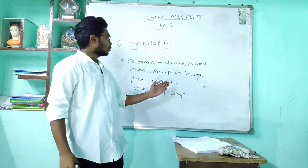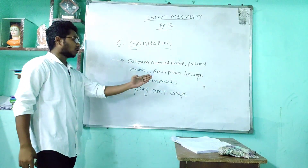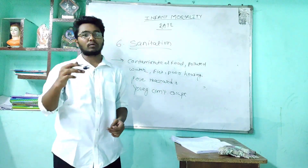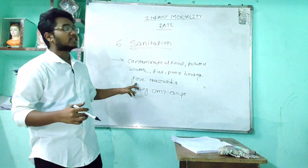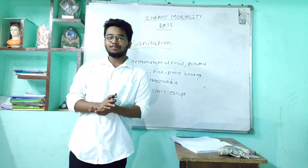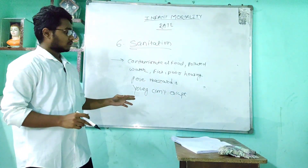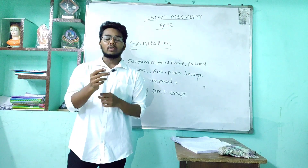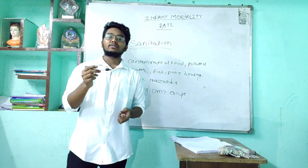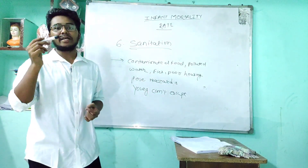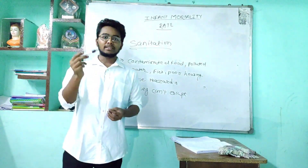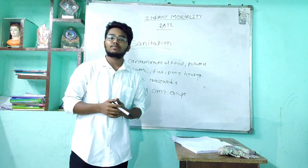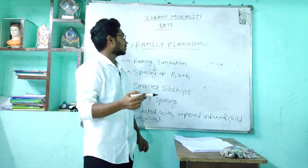Contaminated food, polluted water, flies, poor housing conditions, overcrowding, and low socioeconomic status pose hazards which young children cannot escape. Sanitation is very important around children. Infant mortality rate is an indicator of children's health status and also the condition of the social environment.